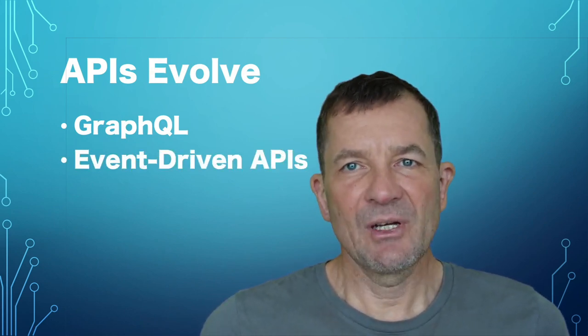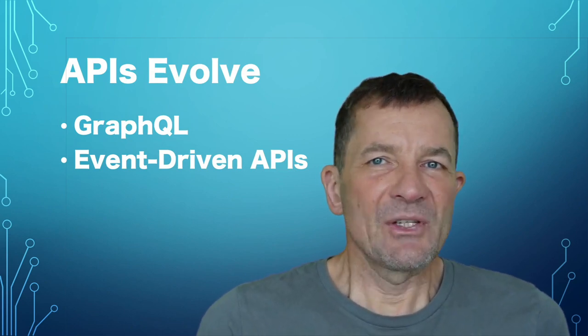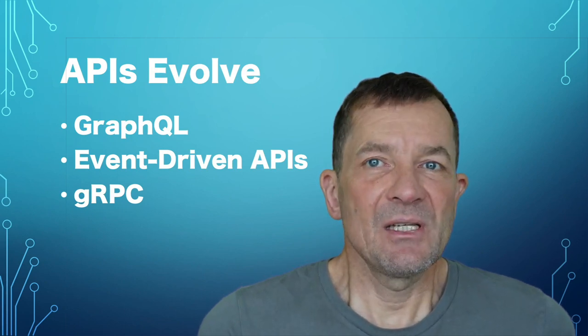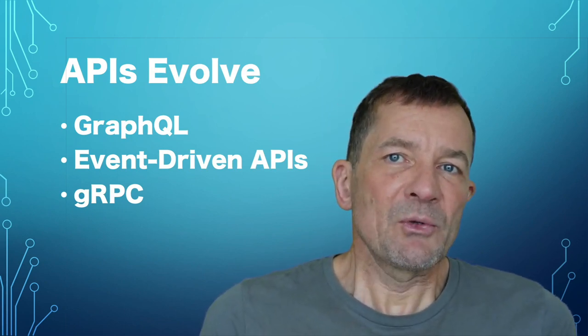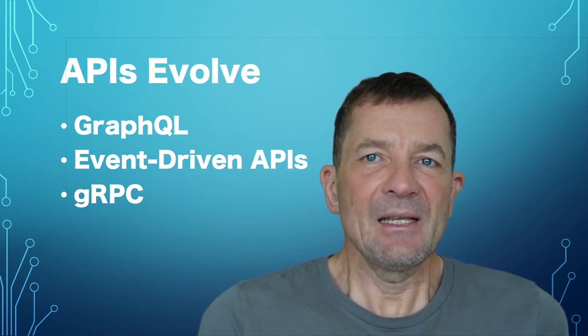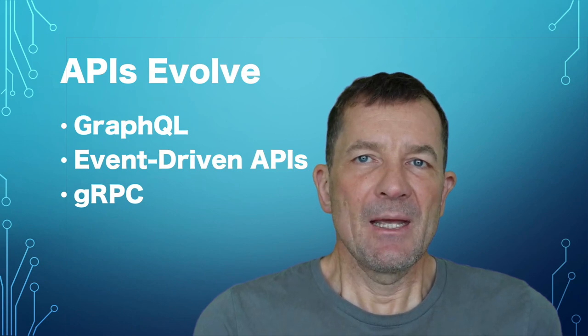It all depends on your terminology. The API space is very active, dynamic, and still evolving. We have new technologies coming up all the time — GraphQL, Event-Driven APIs, gRPC, and other different styles. Web services were kind of a thing of the 2000s, representing the first wave of web-based machine-to-machine communication protocols.